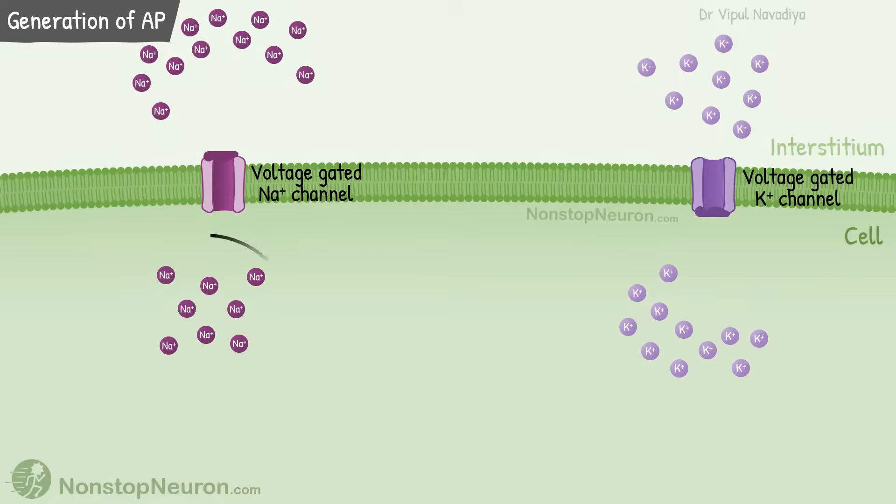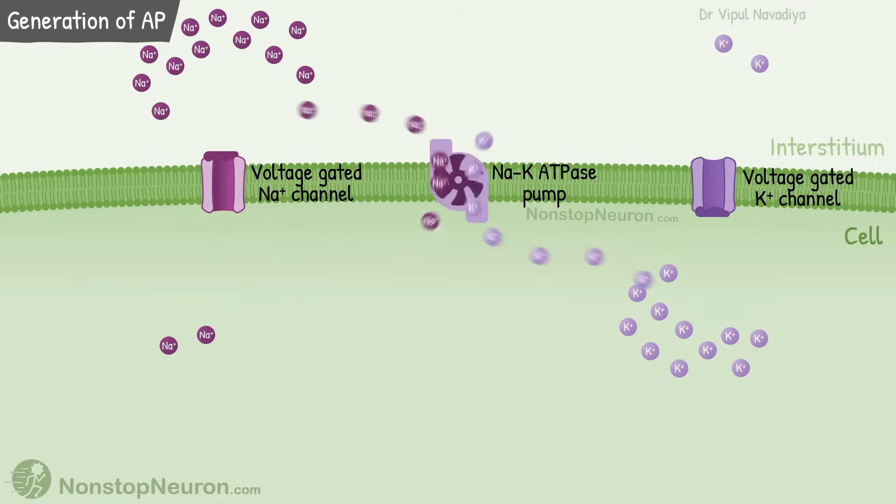At this point the concentration of sodium is slightly increased and the concentration of potassium is slightly decreased inside the cell. But there is nothing to worry about. Ongoing activity of sodium potassium ATPase pump restores their concentration. So these were all the events involved in generation of action potential.